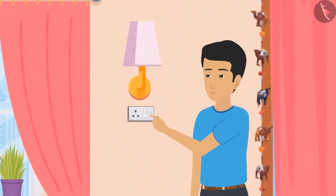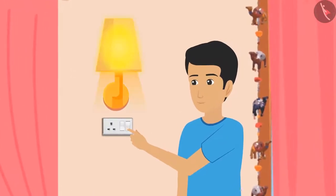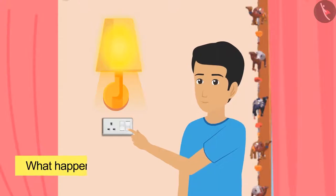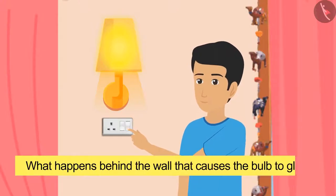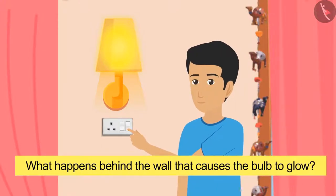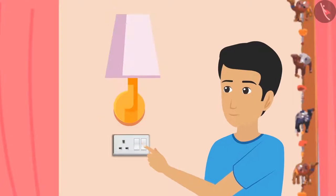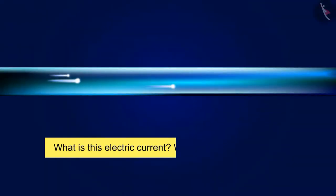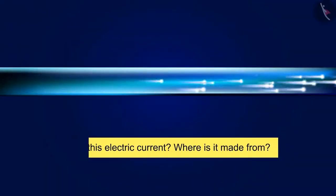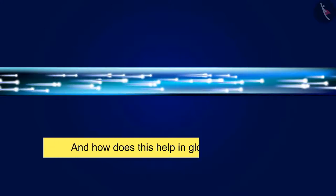You must have seen this setting in your house. You press the switch and the bulb starts glowing. Have you ever thought about what happens behind the wall that causes the bulb to glow? You must have heard from elders in your house or teachers in school that the glowing of a bulb is based on electric current. But what is electric current? Where is it made from? And how does this help in glowing the bulb?